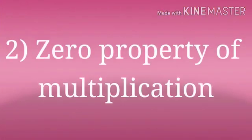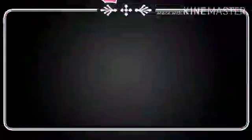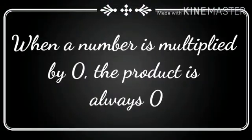Now let us study about the second property, that is zero property of multiplication. When a number is multiplied by zero, the product is always zero.